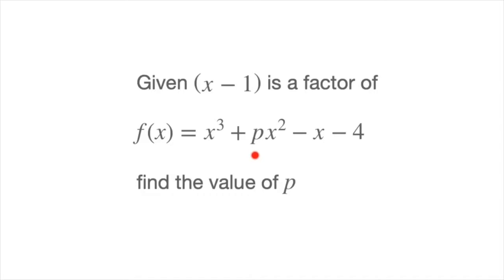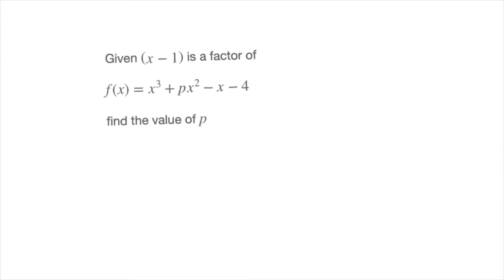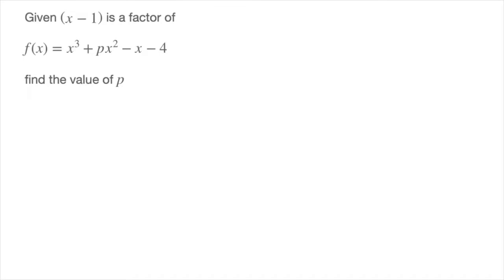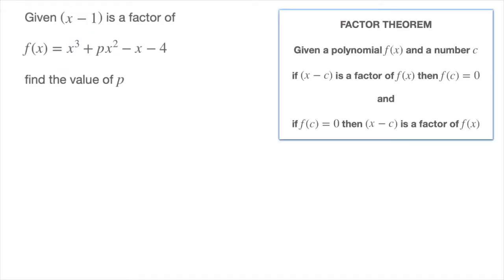That's the coefficient multiplying the x squared term. The important thing to realize is that since we're told x minus 1 is a factor of this polynomial, the factor theorem lets us state that 1 must be a zero of that polynomial. In other words, we can write f of 1 must equal to 0. Replacing every x inside f of x by 1, we obtain f of 1 equals 1 cubed plus p times 1 squared minus 1 minus 4.